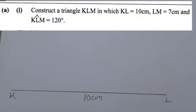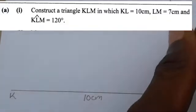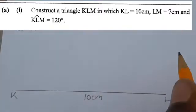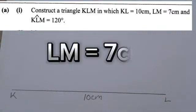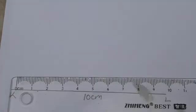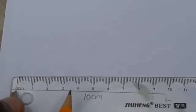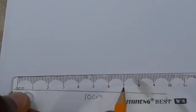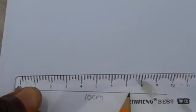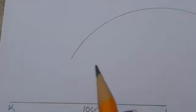The question says LM is 7 centimeters. Get your ruler and compass and collect the measurement of 7 centimeters from zero. Because LM goes up from L, put your compass point at L and make an arc.